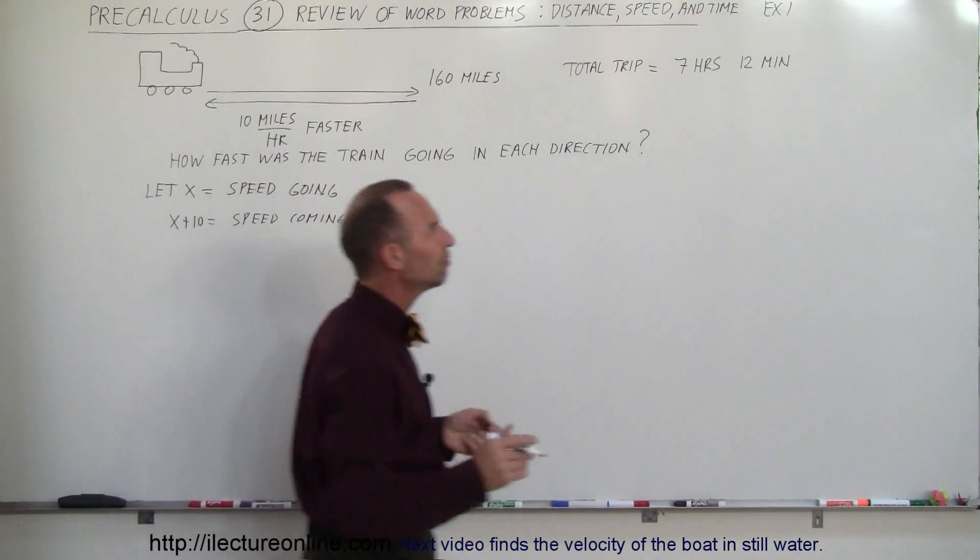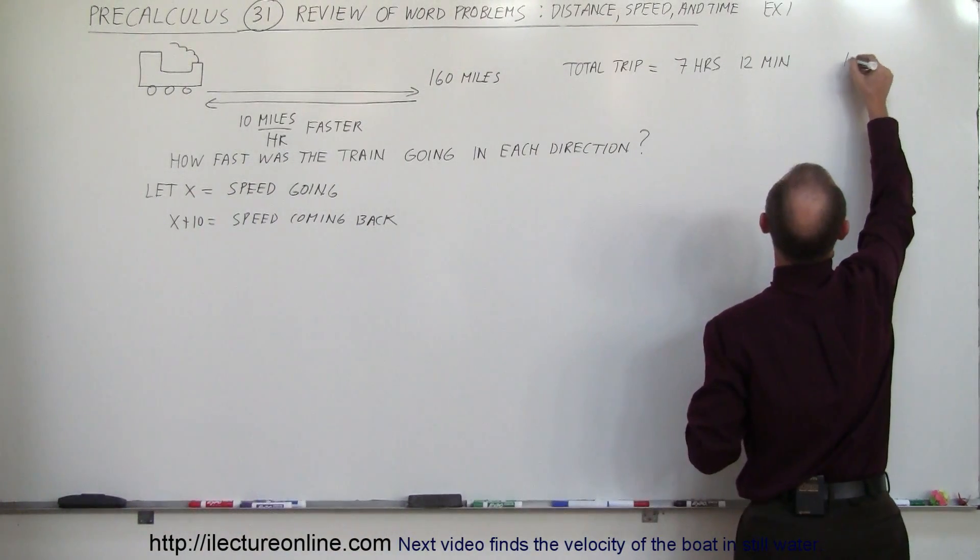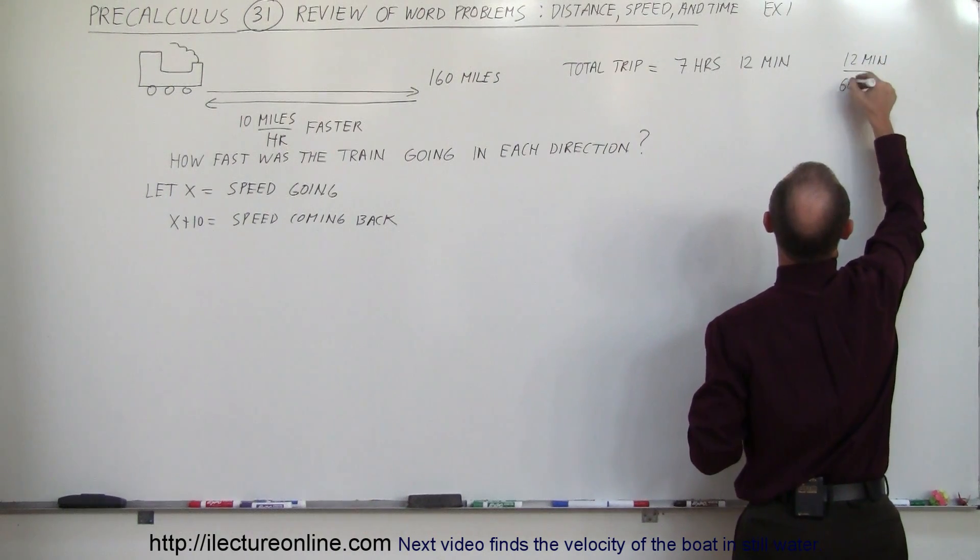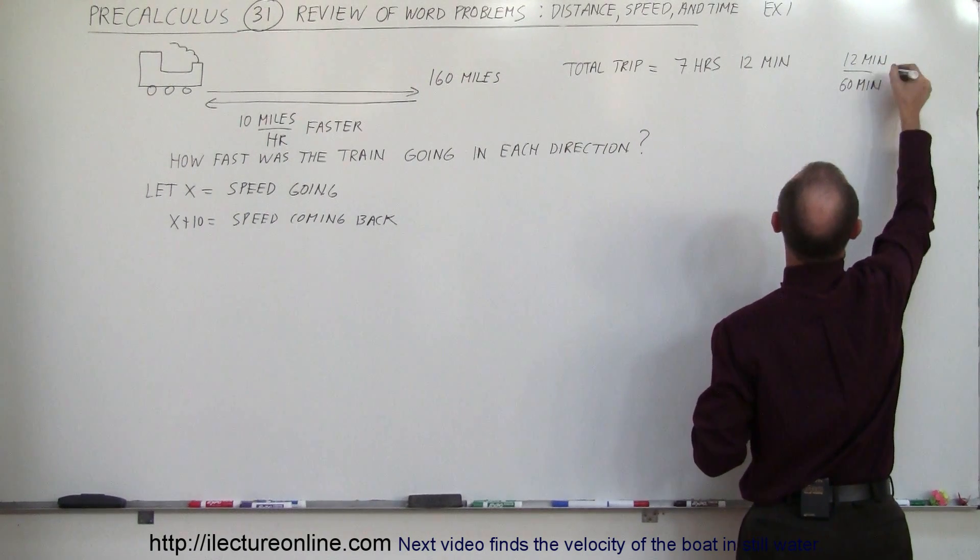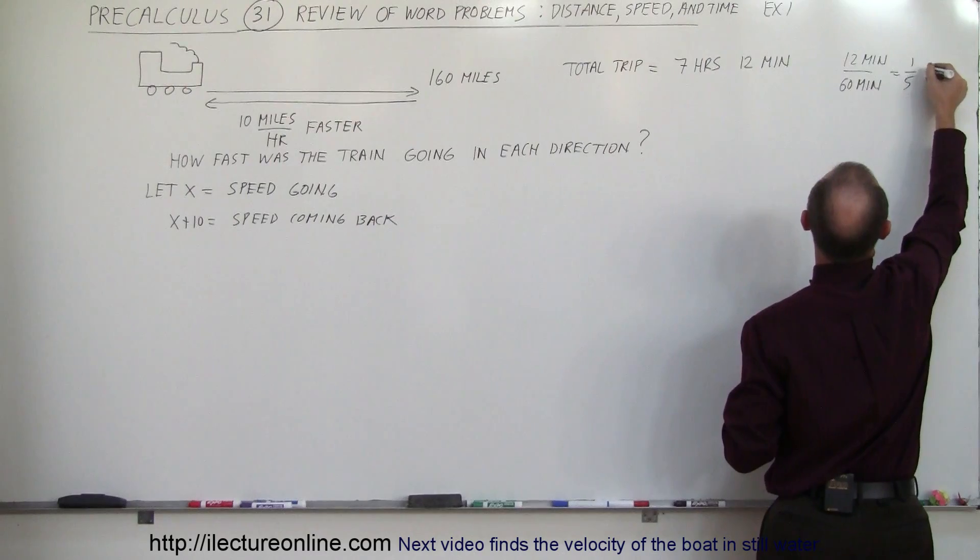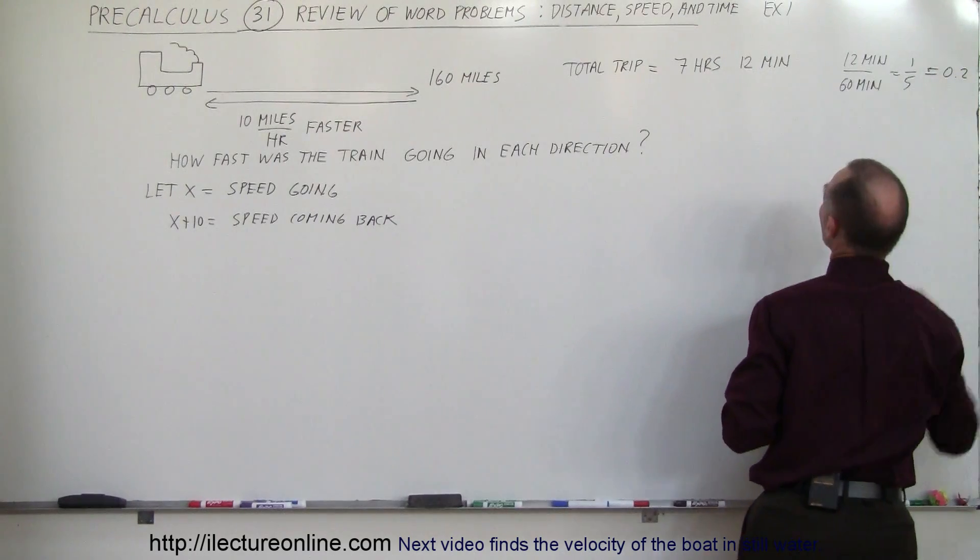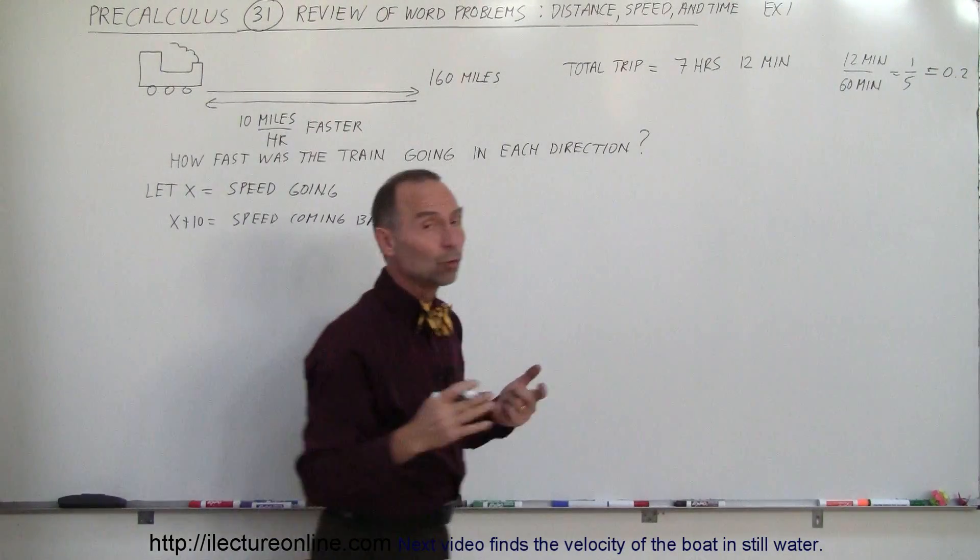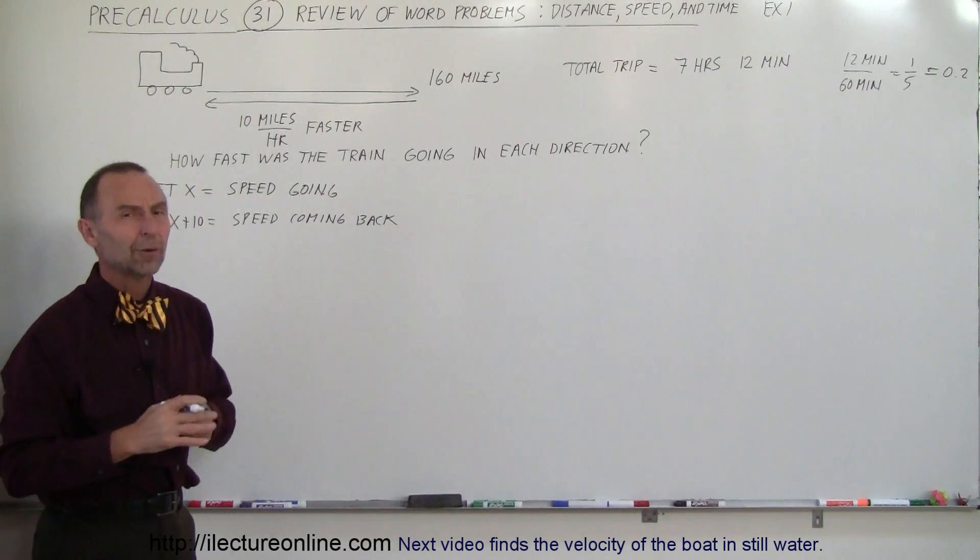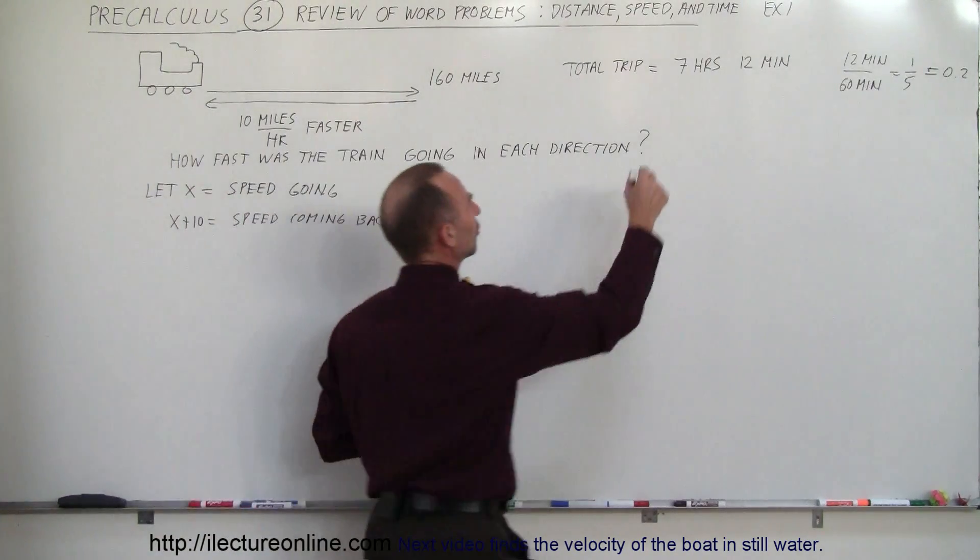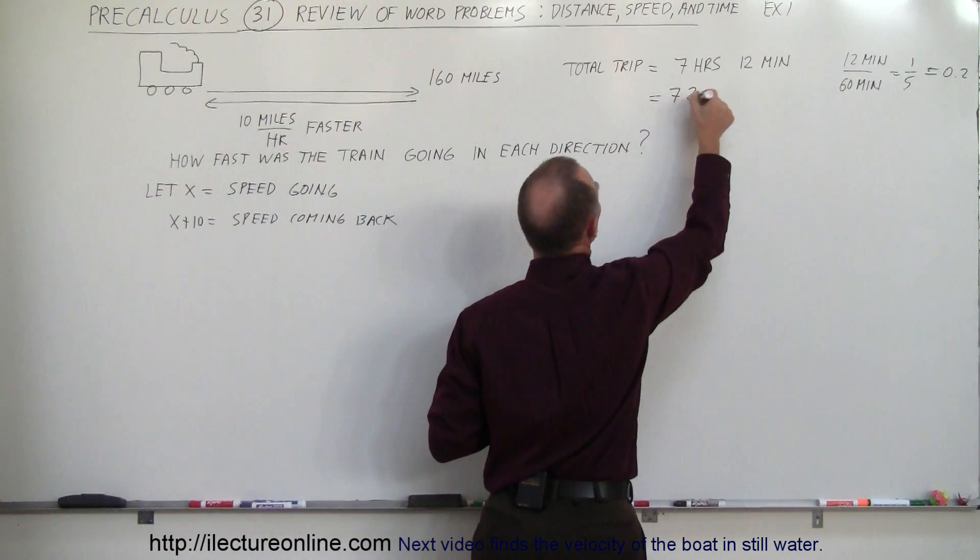Now since 12 minutes, if we divide that by 60 minutes, that ratio is 1 to 5, which equals 0.2. So we can convert 7 hours and 12 minutes to 7.2 hours, and we probably want to do that. So this is equal to 7.2 hours.